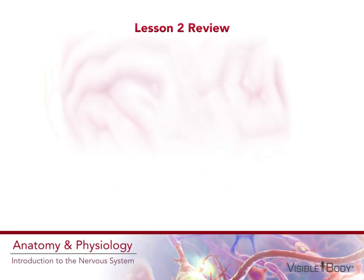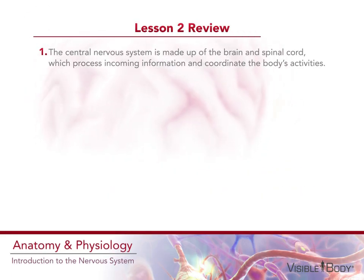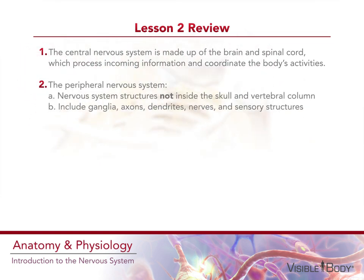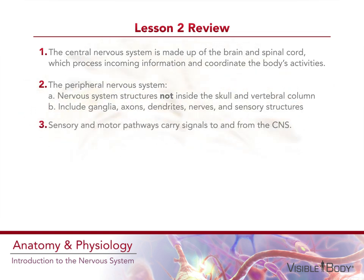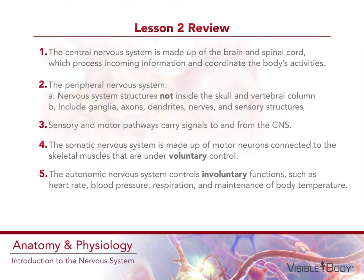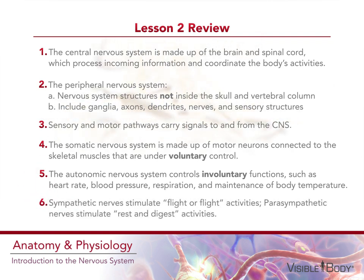Here's a quick review of what we covered in this section. 1. The central nervous system is made up of the brain and spinal cord, which process incoming information and coordinate the body's activities. 2. The peripheral nervous system is made up of the nervous system structures not inside the skull and vertebral column, including ganglia, axons, dendrites, nerves, and sensory structures. 3. Sensory and motor pathways carry signals to and from the CNS. 4. The somatic nervous system is made up of motor neurons connected to skeletal muscles that are under voluntary control. 5. The autonomic nervous system controls involuntary functions such as heart rate, blood pressure, respiration, and the maintenance of body temperature. 6. Sympathetic nerves stimulate fight-or-flight activities. Parasympathetic nerves stimulate rest-and-digest activities.